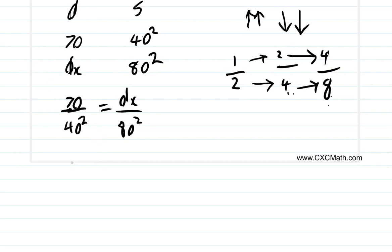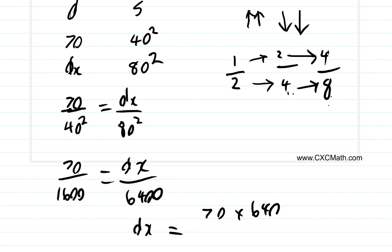So it's going to be 70 divided by 40 squared, 1,600, equals dx divided by 6,400. So you want dx now. Multiply both sides by 6,400. What do you get? dx equals 70 times 6,400, all over 1,600.